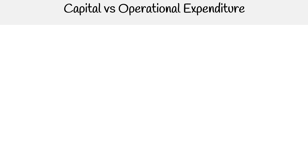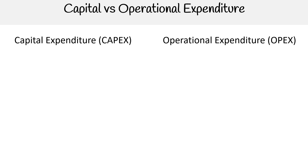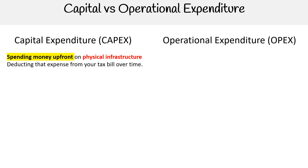Hey, this is Andrew Brown from ExamPro and we're looking at capital versus operational expenditure. On the left hand side we have CapEx, capital expenditures. Capital expenditure is spending money up front on physical infrastructure, deducting the expenses from your tax bill over time.